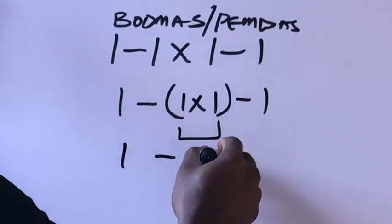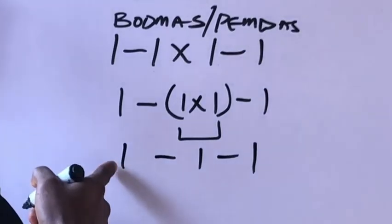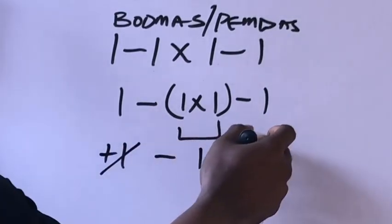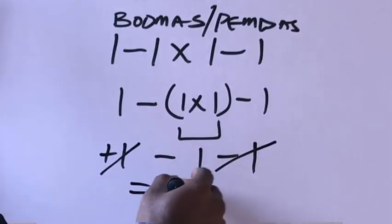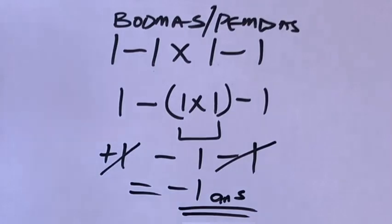Put this minus down here. Don't forget this one is carrying an invisible plus. Now this plus one we cancel with this minus one, so we are left with minus one. So our final answer is minus one.